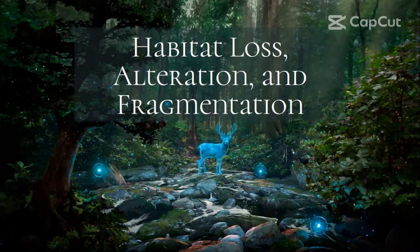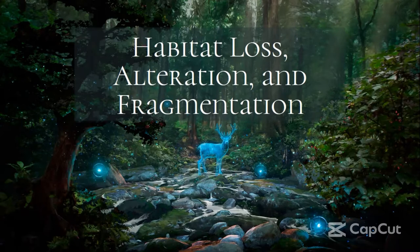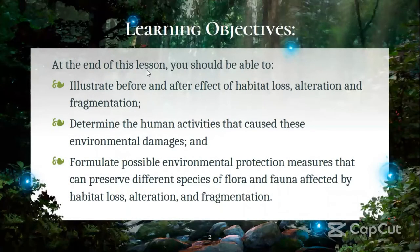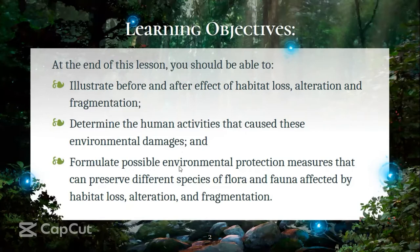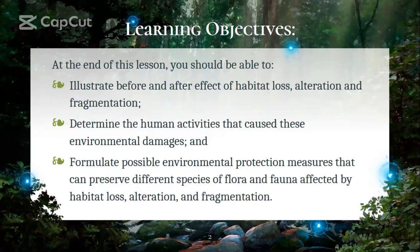We have these three — habitat loss, alteration, and fragmentation — which are the ecological phenomena that would greatly affect our entire ecosystem. Our learning objectives: by the end of the lesson, you should be able to illustrate the before and after effects of habitat loss, alteration, and fragmentation; determine the human activities that cause these environmental damages; and present possible environmental protection measures that can preserve different species of flora and fauna affected by habitat loss and fragmentation.